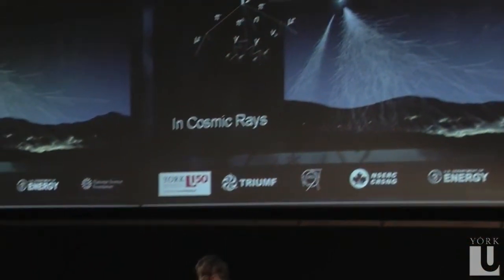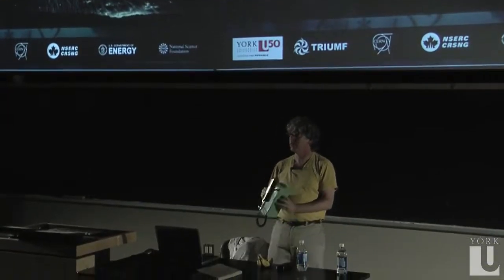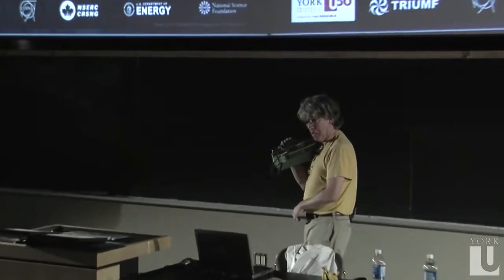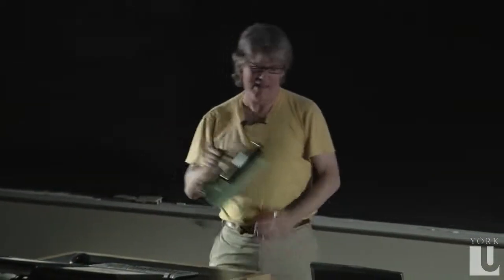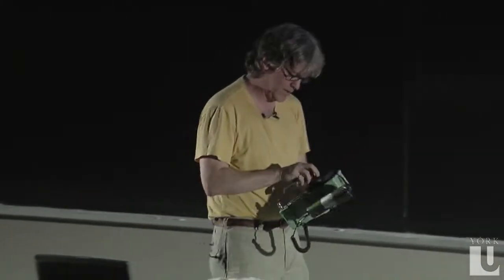This is a Geiger counter, which measures charged particles going through. We have antimatter going through us all the time as we sit here. Particles are streaming in from outer space, hitting the upper atmosphere, and in that same process they create particles and antiparticles — positrons and electrons, protons and antiprotons. Those come streaming down and they're coming through us all the time. And we're okay. Everybody's okay here.